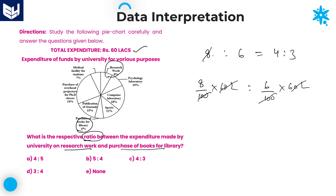Dividing both by 2: 8÷2 = 4 and 6÷2 = 3. So 4 is to 3 is the right answer. Option C.